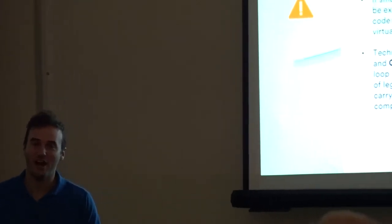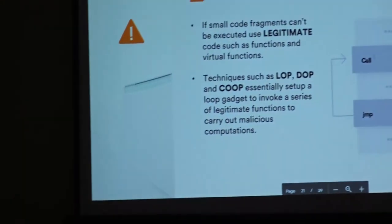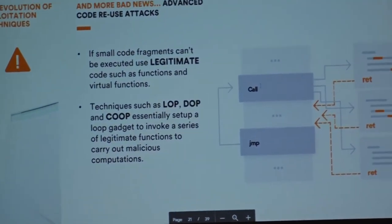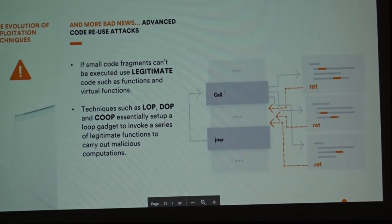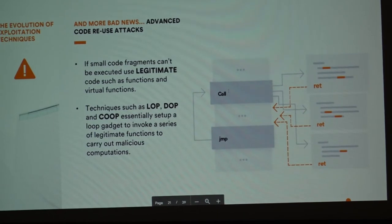And here's bad news: advanced code reuse attacks have emerged. We call them COOP (Counterfeit Object-Oriented Programming), LOP (Loop-Oriented Programming), and DOP (Data-Oriented Programming). These are the new guys in town — academic papers proving they can bypass even CET-like mitigations.